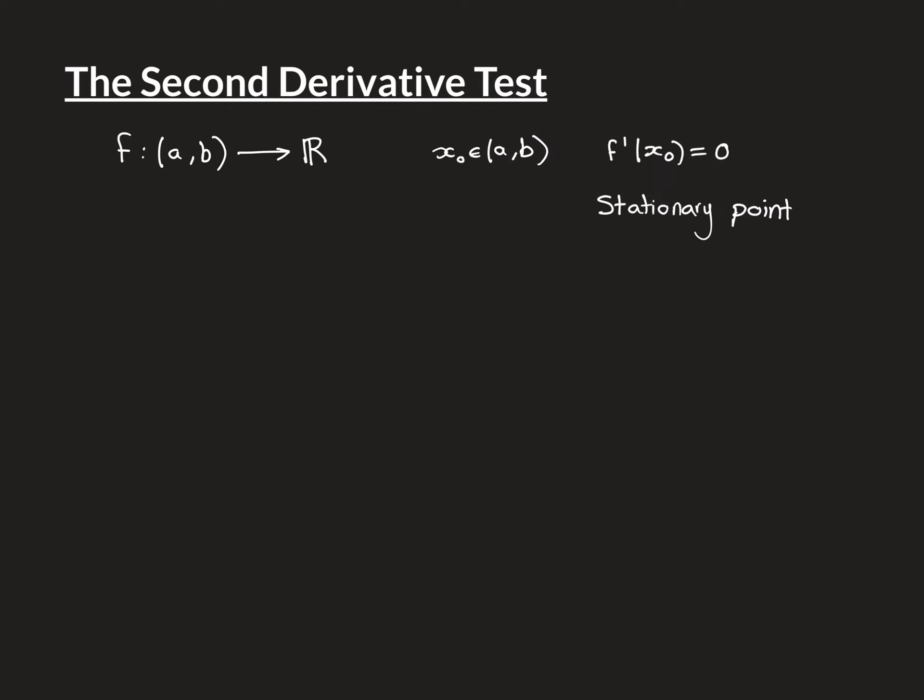Let's begin with terminology you should be familiar with from calculus. We have some function defined on the open interval (a, b). I've moved to using the open interval rather than the closed interval because it avoids the problem of endpoints. Endpoints require consideration as special cases for continuity and derivatives, since you only have one-sided limits there. Using an open interval lets us avoid having to treat those boundary points as special cases.